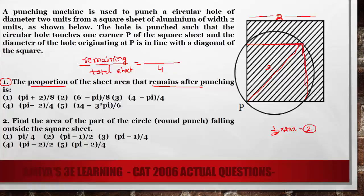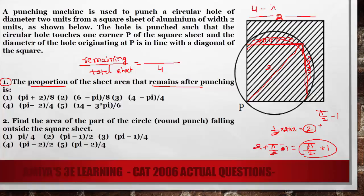We remove the inner square area and also the two arc regions outside, which we calculated in question 2 as π/2 − 1. So the total area covered by the punching machine is 2 + (π/2 − 1) = π/2 + 1. The remaining area is 4 − (π/2 + 1) = 3 − π/2 = (6 − π)/2. Therefore, the proportion of the seat that remains is (6 − π)/8, which is option number 2.